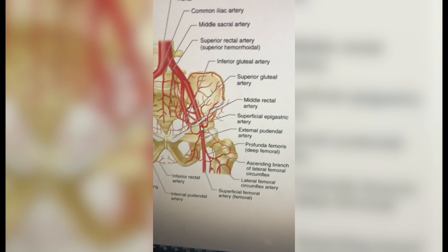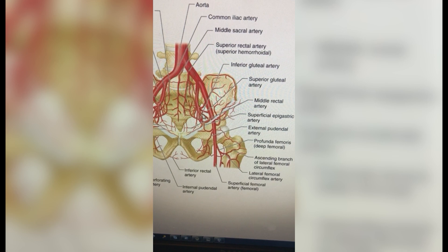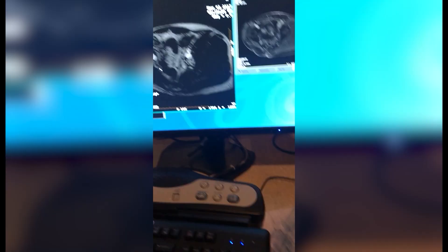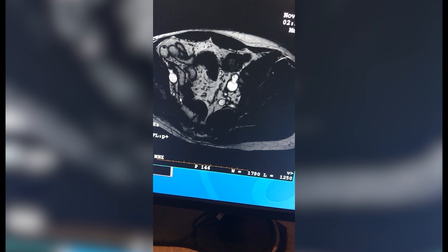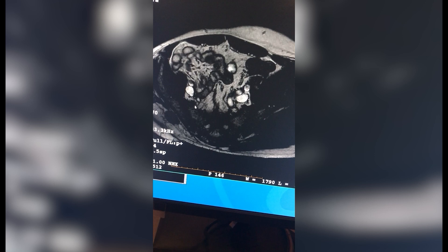We did a very cool case today — a gluteal MRA on a physician who had a desmoid tumor removed from his right gluteal muscle. They wanted to look at the vasculature on both the left and right sides and make comparisons. We had to look at two very small vessels coming off of the inferior iliac: the superior and inferior gluteal arteries. You can see how small they are. We started with some balanced gradient echo sequencing and did some FIESTAs with thick slices down through the pelvis. You can see the femoral and iliac pretty well, but it's hard to see any of the smaller vessels.